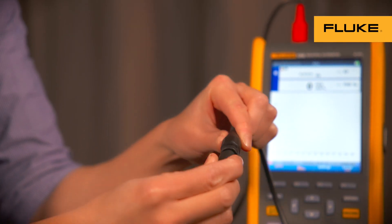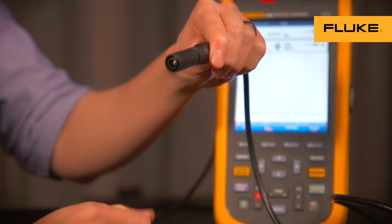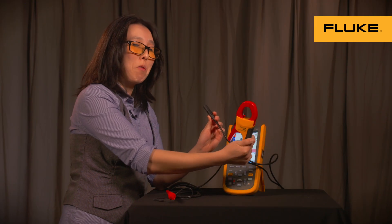It hooks on, like so, it's keyed, and then you twist it, and then it's on. The current clamp itself comes standard with the 125B kit.